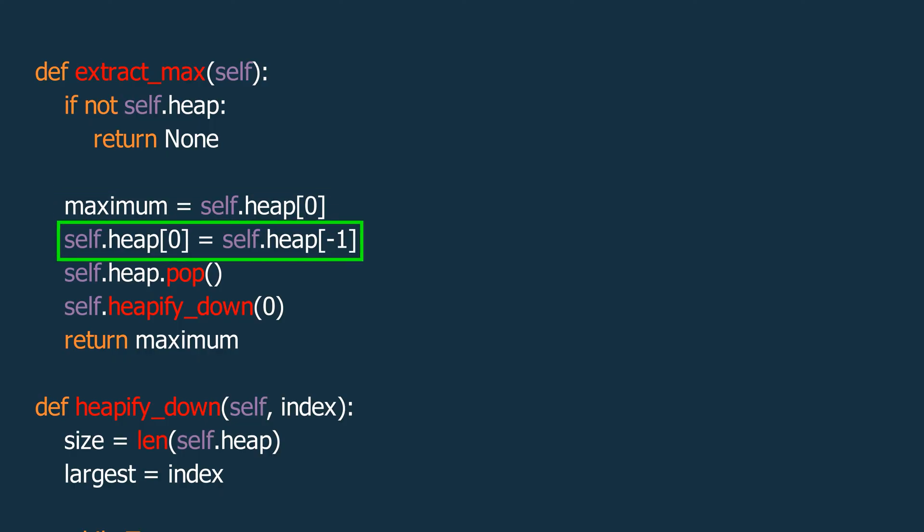Otherwise, we store the root element in a variable called Maximum. Then, we replace the root element with the last element in the array, and remove the last element from the heap. Finally, we call HeapifyDown to restore the max heap property, and once the structure is balanced, we return the maximum value.